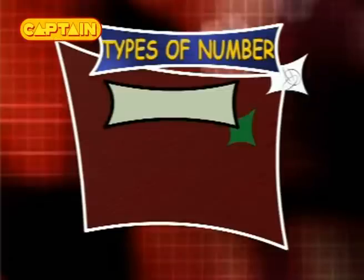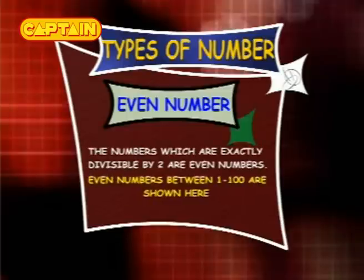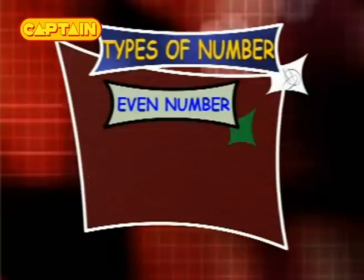Types of numbers. Even numbers: the numbers which are exactly divisible by 2 are even numbers. Even numbers between 1 and 200 are shown here.